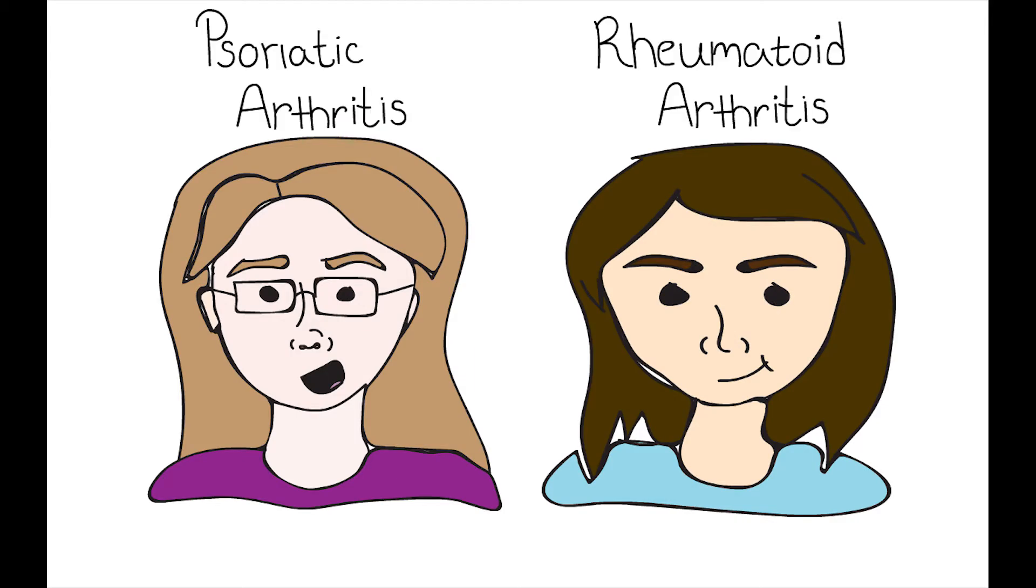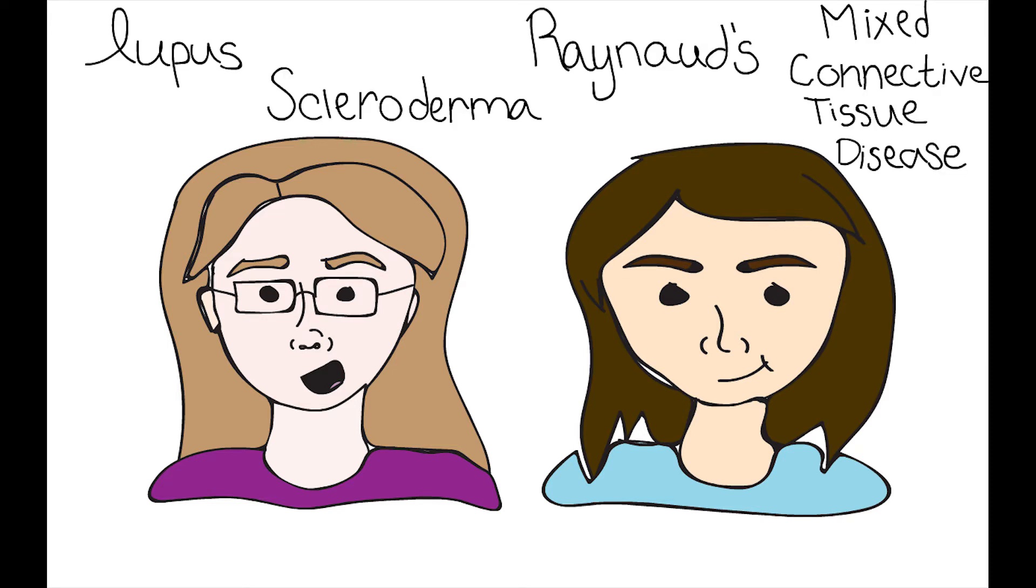Sure, we had the labels of rheumatoid and psoriatic arthritis, a family history of lupus, scleroderma, Raynaud's, and mixed connective tissue disease, but what was helping doctors come to these conclusions?